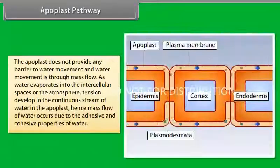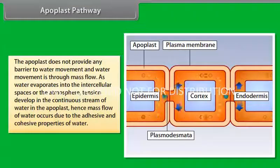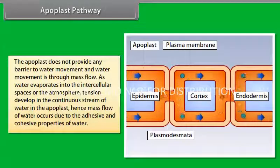The apoplast does not provide any barrier to water movement and water movement is through mass flow. As water evaporates into the intercellular spaces or the atmosphere, tension develops in the continuous stream of water in the apoplast. Hence, mass flow of water occurs due to the adhesive and cohesive properties of water.